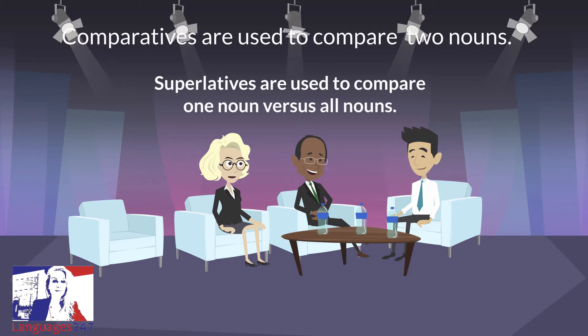We use 'everything' instead of 'all' when it means all the things: 'everything went wrong', 'thanks for everything'. We also use 'everybody' instead of 'all' when it means all the people: 'everybody has arrived', 'he knew everybody there'.